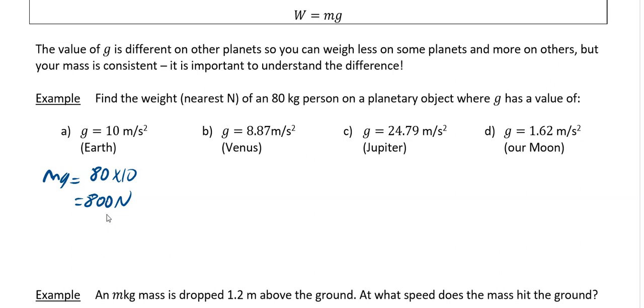On Venus, the g is a wee bit less. So it is going to be 80 times 8.87, and if you do 80 times 8.87 you will have 709.6 newtons. On Jupiter, the g is an awful lot more. So it is going to be 80 times 24.79, and if you do that out you are going to get 1983.2 newtons.